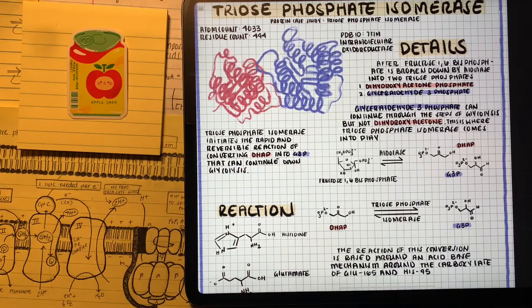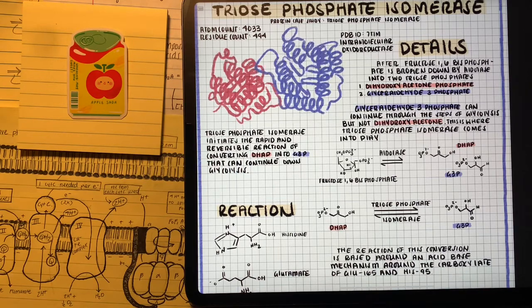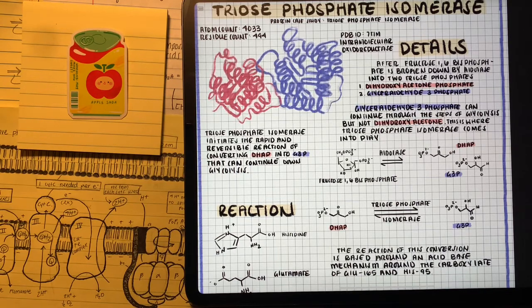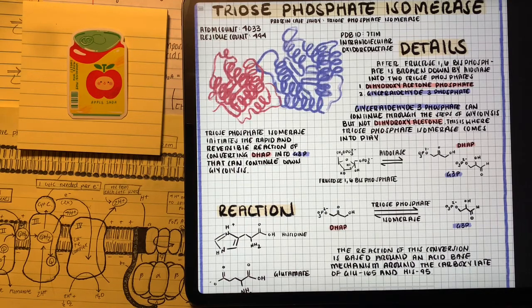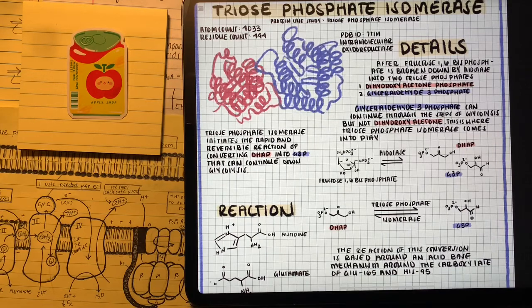So we need to turn DHAP into G3P, and that's where triose phosphate isomerase comes in. It's going to isomerize DHAP to G3P. So now we have two G3Ps entering the rest of the cycle, and that's why the majority of the products from here on out are going to be doubled.